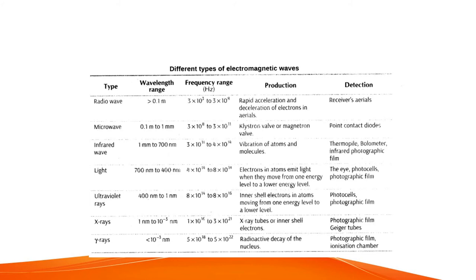For radio waves, the wavelength is greater than 0.1 meter. Frequency can be found using the formula v = fλ, so frequency equals speed divided by wavelength. Radio waves are produced by rapid acceleration or deceleration of electrons in aerials, and they are detected by receivers using aerials.